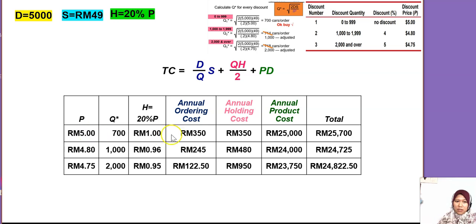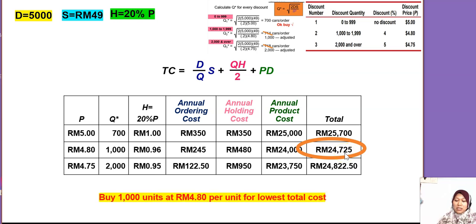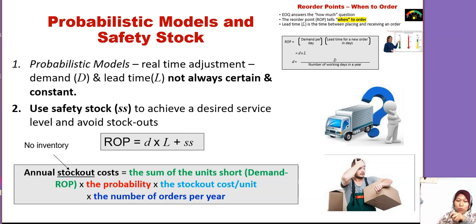The total costs are: at 5 ringgit, total cost = 25,700; at 4 ringgit 80 cent, total cost = 24,725; at 4 ringgit 75 cent, total cost = 24,822.50. We go for the lowest total cost — 24,725 — so the answer is: buy at quantity 1,000 at the price of 4.80 ringgit for the lowest total cost. That's how you do the quantity discount model.